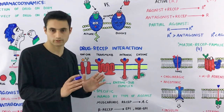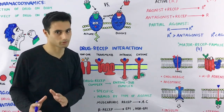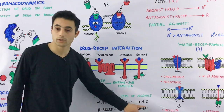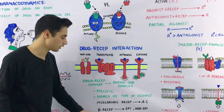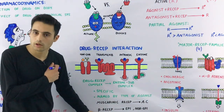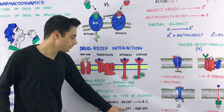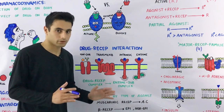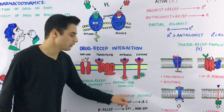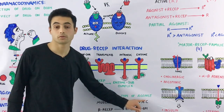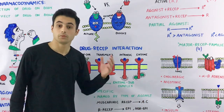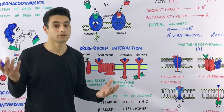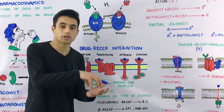Major properties of the receptor molecule include specificity, because they are very specific in nature. Only certain types of receptors allow binding with certain types of drugs. For example, muscarinic receptors will only allow acetylcholine to bind with them. Beta receptors present in our heart will only allow epinephrine and norepinephrine to bind with them. Receptors are majorly named after the agonist that works best with them — for example, muscarinic receptors and histamine receptors.